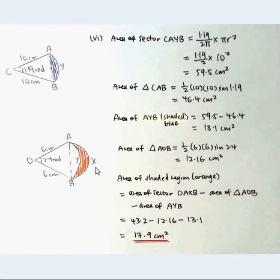Next, from this diagram, we first find the area of triangle AOB: half times 6 times 6 sin 2.4, equal to 12.16 cm².